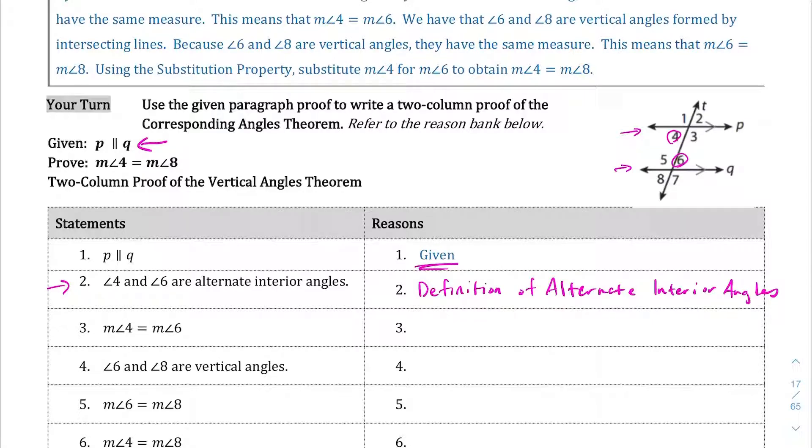And what do we know about alternate interior angles? Well, alternate interior angles are equal. So we can say that the measure of angle 4 is equal to the measure of angle 6. And the reason for that is because of the alternate interior angles theorem.